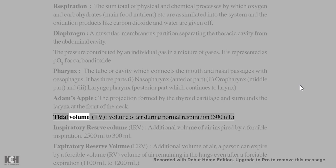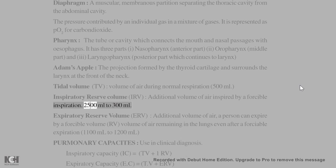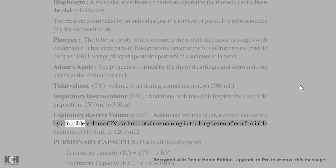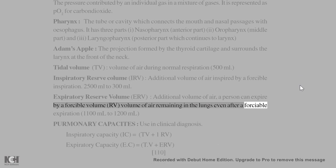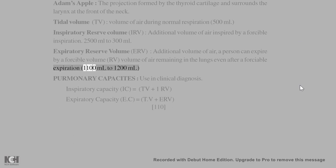Tidal Volume (TV): volume of air during normal respiration — 500 ml. Inspiratory Reserve Volume (IRV): additional volume of air inspired by a forcible inspiration — 2,500 ml to 3,000 ml. Expiratory Reserve Volume (ERV): additional volume of air a person can expire by forcible expiration. Residual Volume (RV): volume of air remaining in the lungs even after a forcible expiration — 1,100 ml to 1,200 ml.